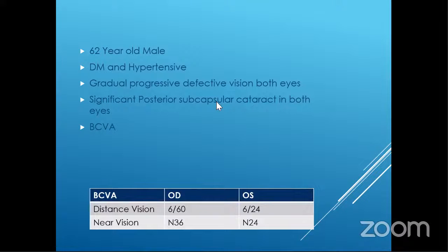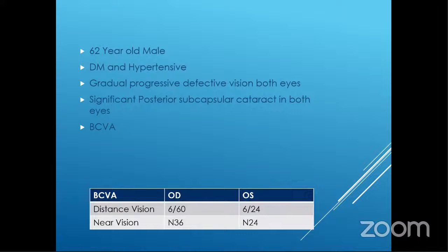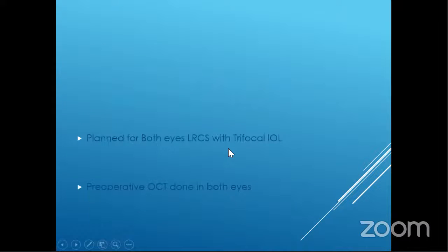Am I audible now? Yes. So, a 68-year-old male diabetic and hypertensive patient presented with gradual, progressive, defective vision in both eyes. His visual acuity is 6/60 and N36 in the right eye, and 6/24 and N24 in the left eye. He had significant posterior subcapsular cataract, fundus examination was hazy, and he had mild non-proliferative diabetic retinopathy. He was routinely planned for bilateral cataract surgery — specifically, laser refractive cataract surgery with trifocal IOL.